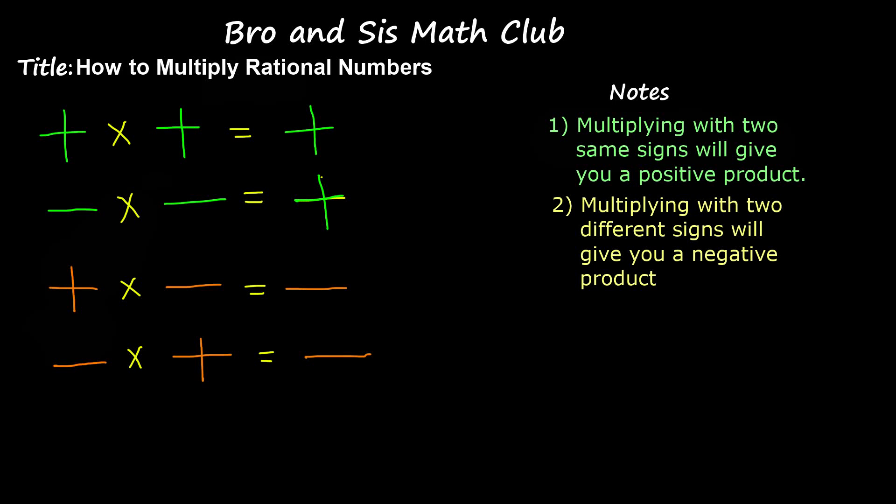Hey guys, welcome back to Bernice's Math Club. Today's topic is how to multiply rational numbers. So what are rational numbers? Rational numbers are numbers that can be turned into fractions.